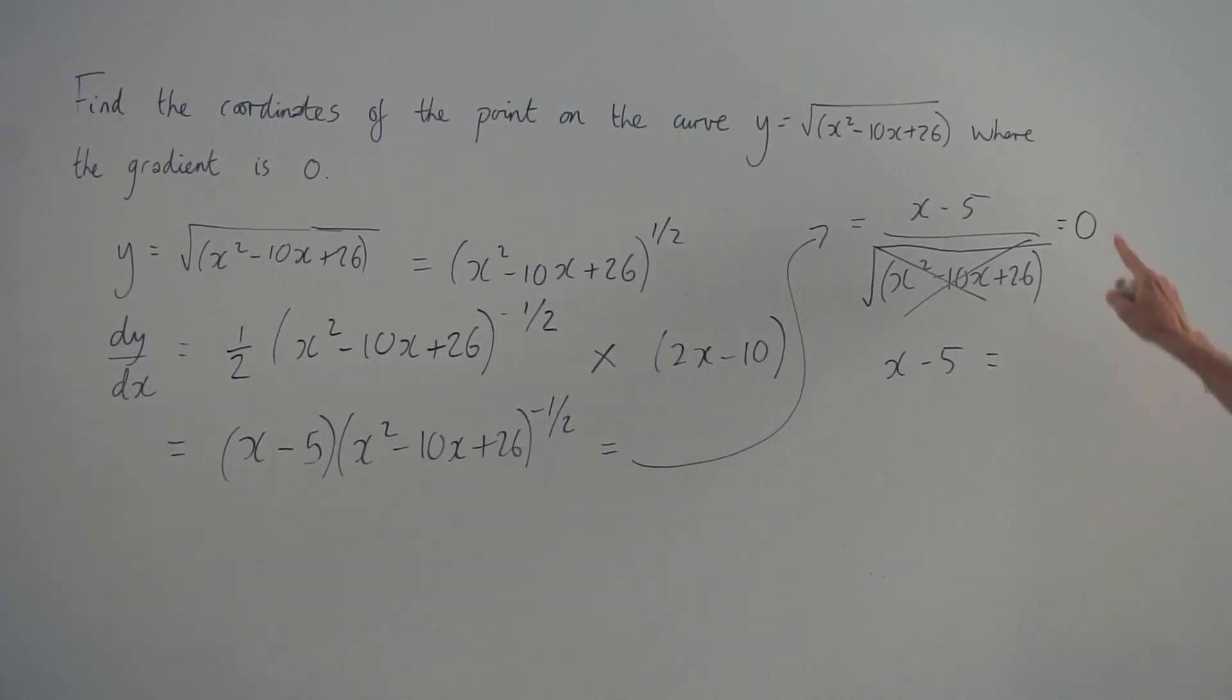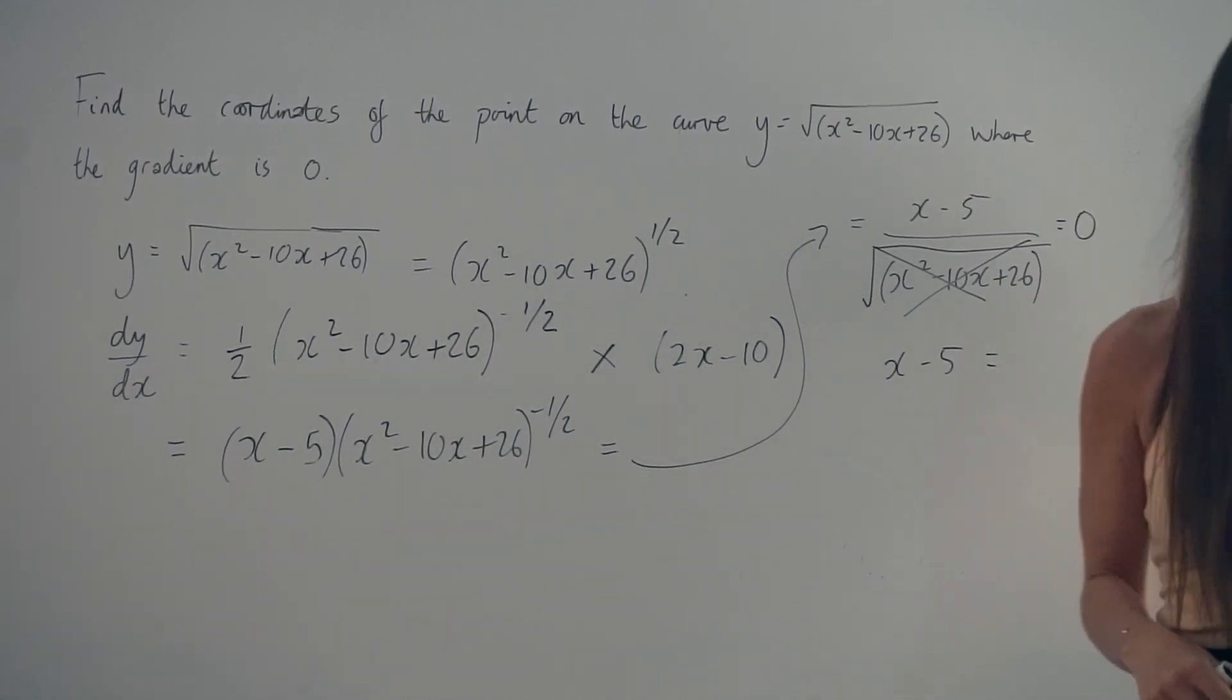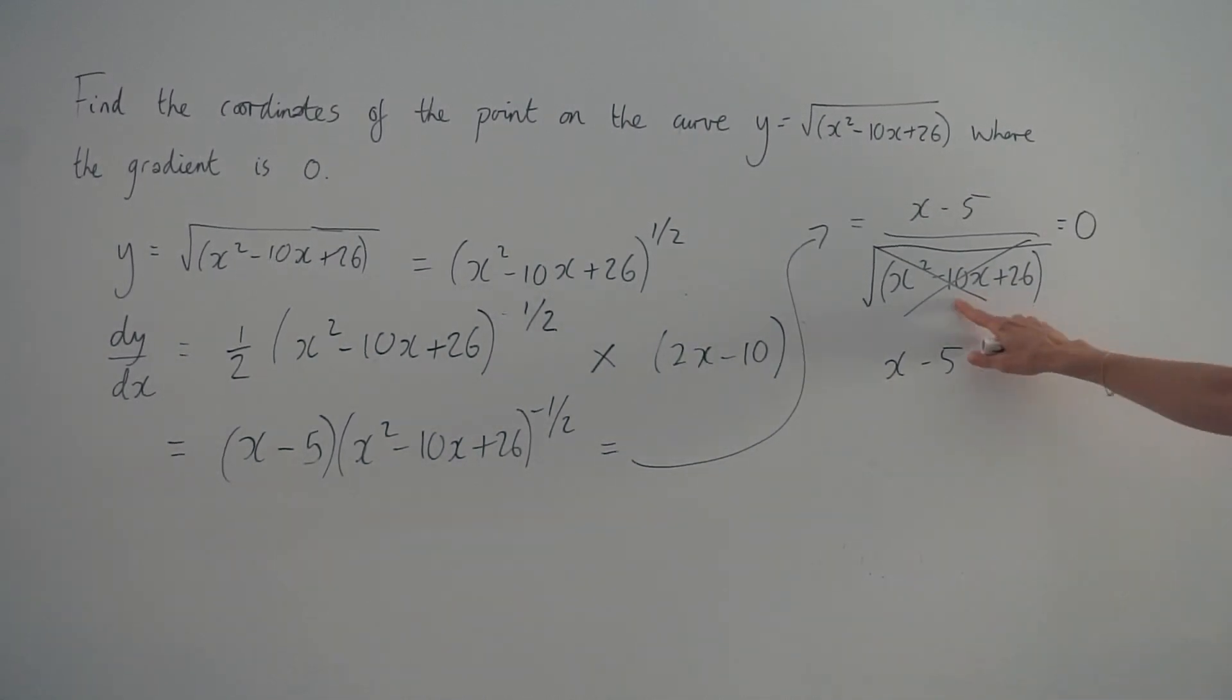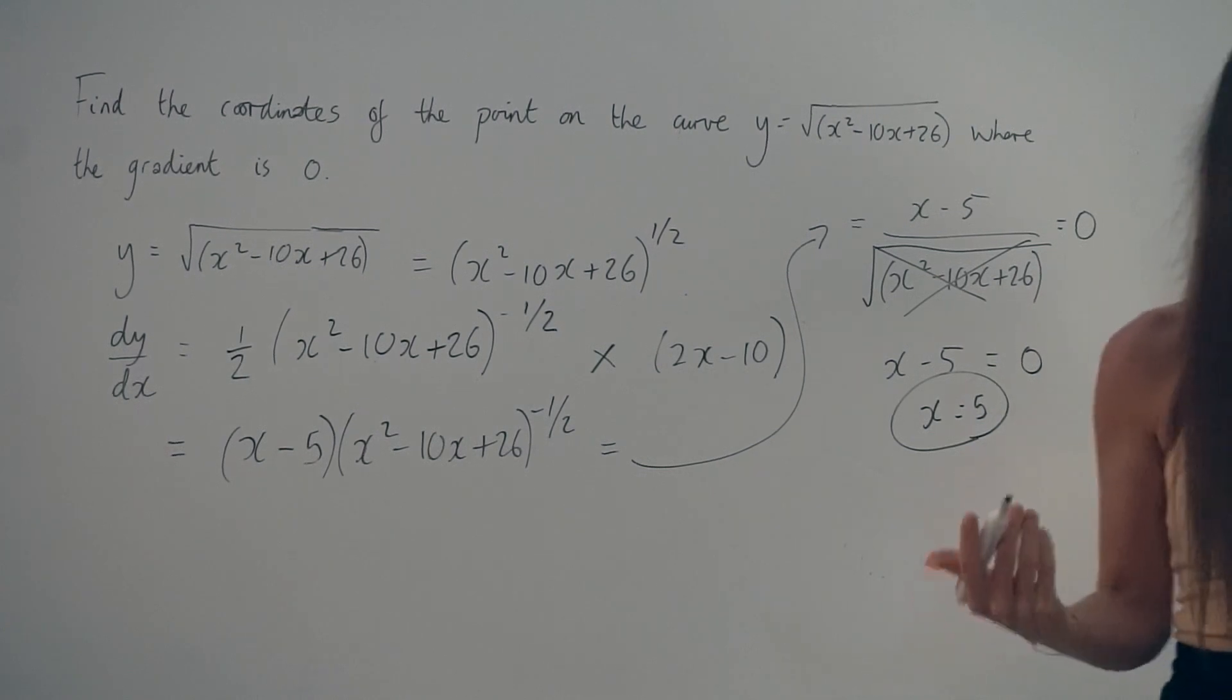And if I multiply the right-hand side by that denominator, I get 0, as whenever you multiply something by 0, you get 0. So if x minus 5 is equal to 0, we know that x is equal to positive 5. So there's our value of x.